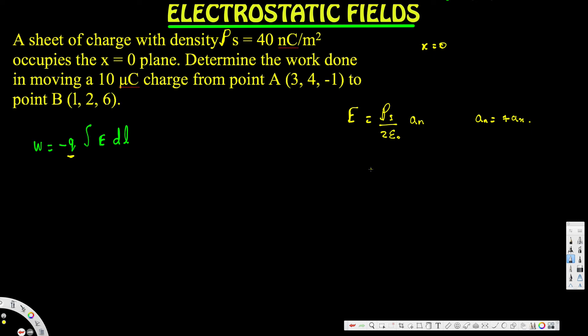Let's plug in the values: 40 × 10⁻⁹ divided by 2ε₀ ax volts per meter. If you calculate this value, you get 2262 ax volts per meter. So this is our electric field.